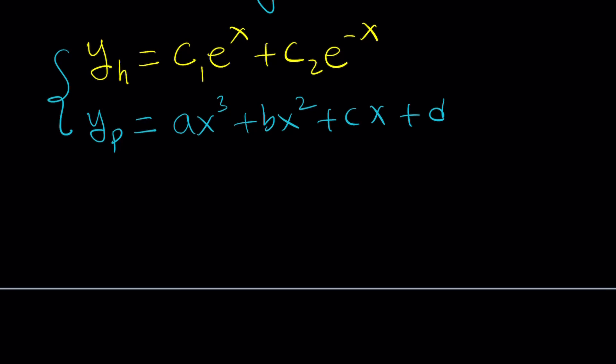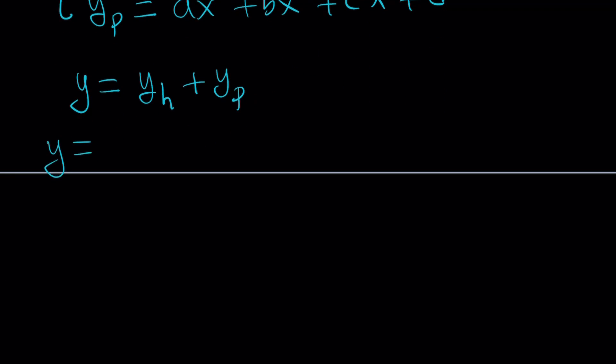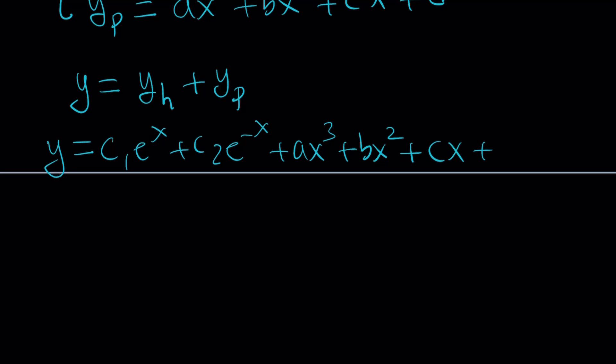The homogeneous solution works in the non-homogeneous case because if you plug it in it gives zero — that's the trick. So the general solution y equals the homogeneous solution plus the particular solution: y equals c sub 1 e to the x plus c sub 2 e to the negative x plus ax cubed plus bx squared plus cx plus d. The first step is finding a candidate for the particular solution, then putting them together and taking derivatives to plug into the original equation y double prime minus y equals x cubed.